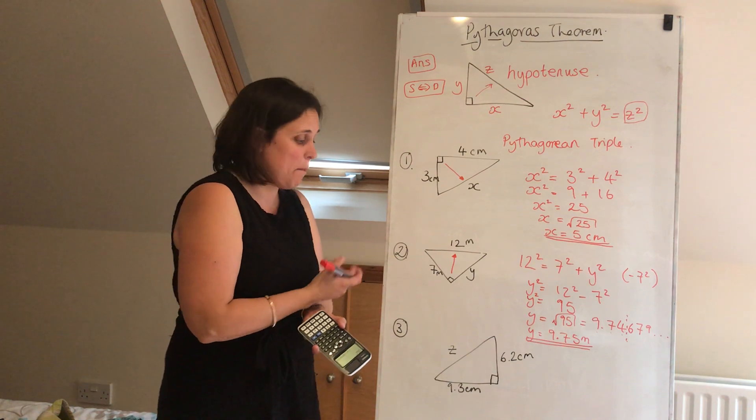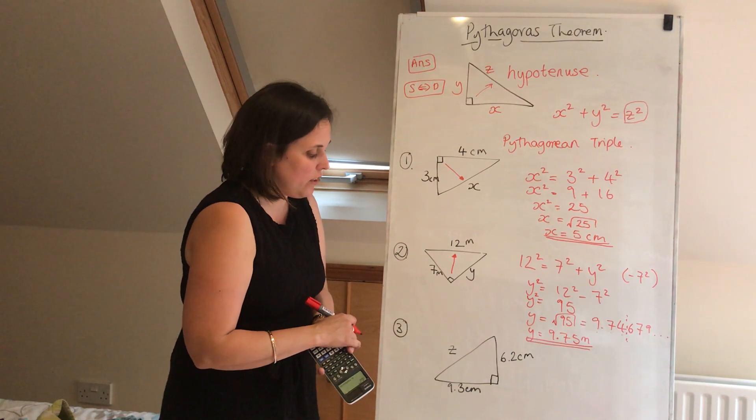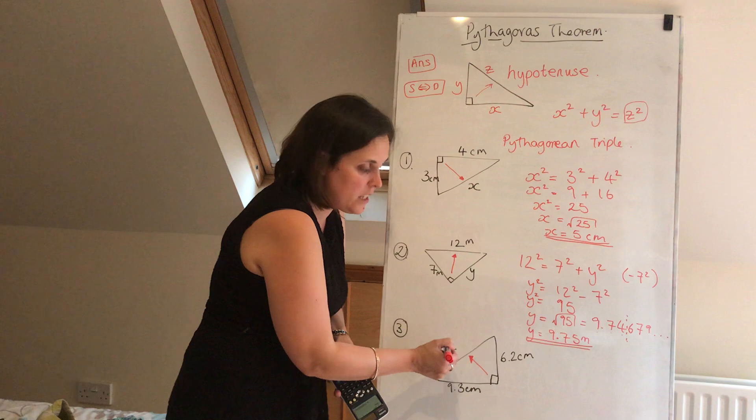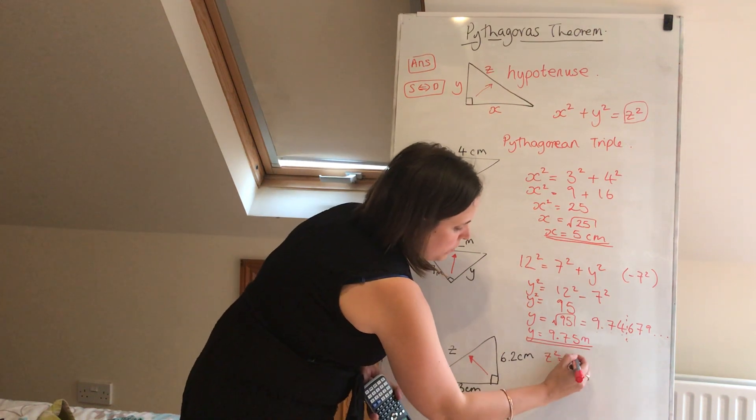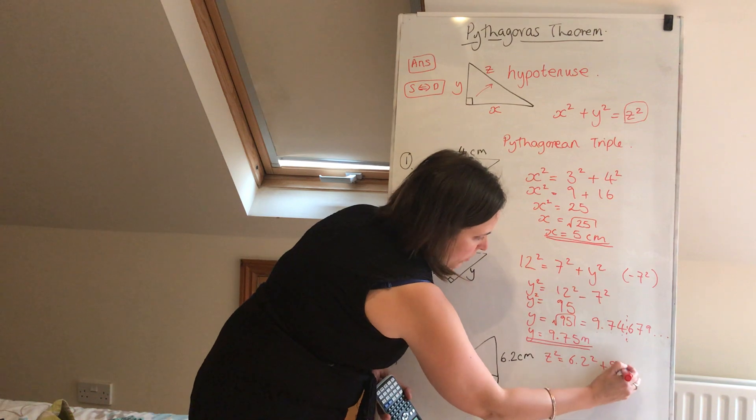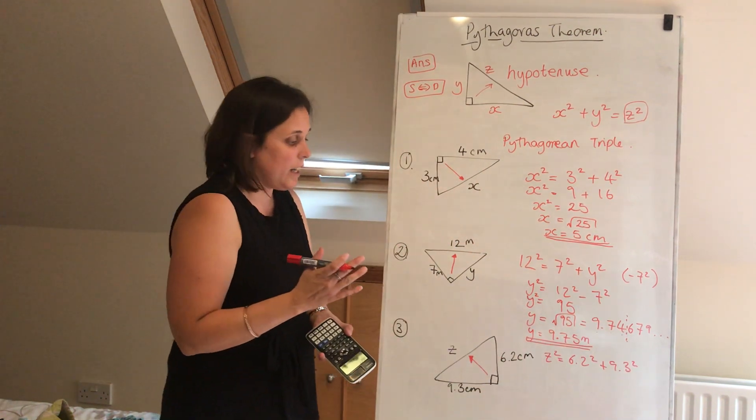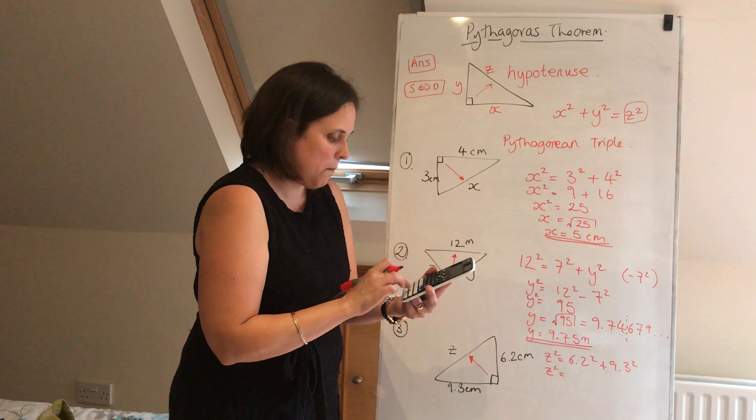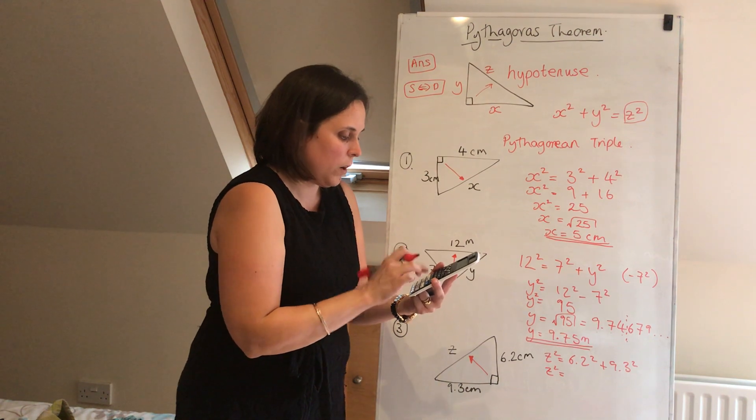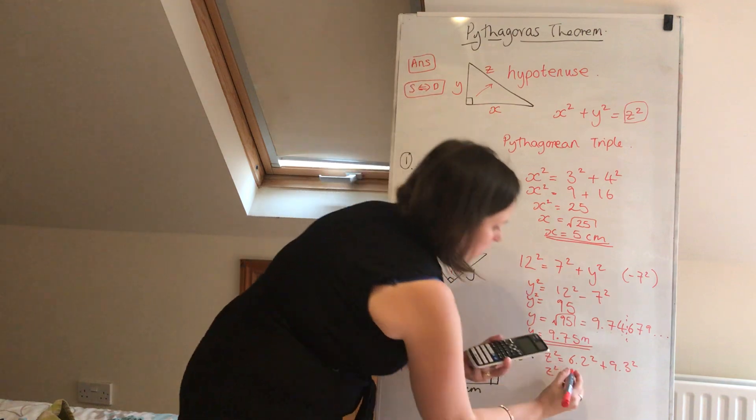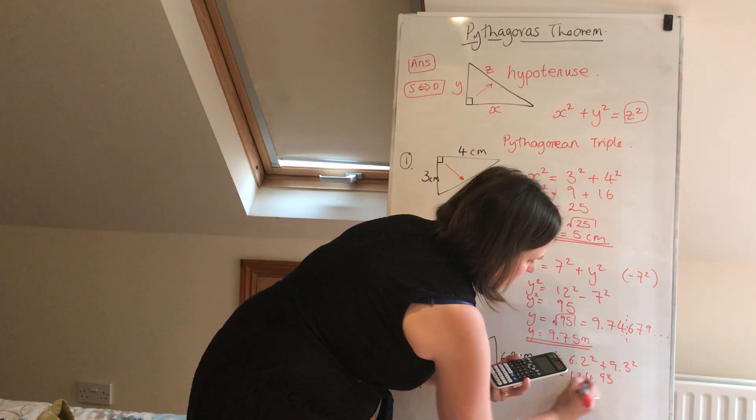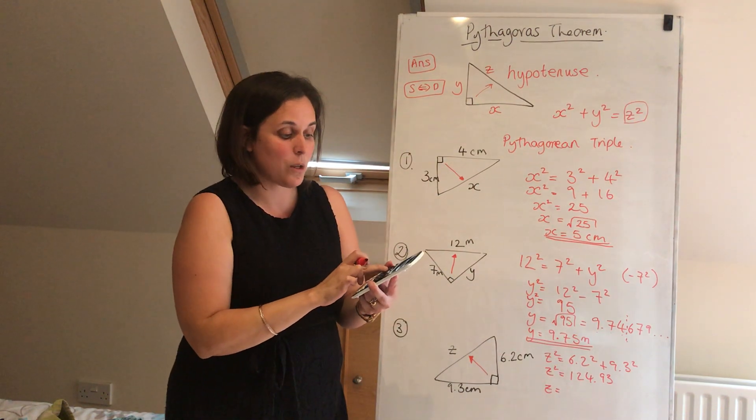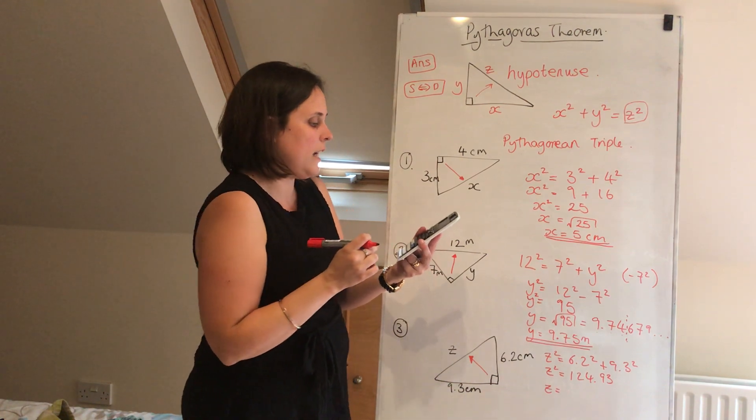Last one. It's exactly the same principle again, but I've just given you some decimal numbers just to show you the difference. Spot your hypotenuse, so it's opposite the right angle. So it's z. So z squared equals 6.2 squared plus 9.3 squared. No need to do any rearranging this time. So we're going to go straight for 6.2 squared plus 9.3 squared. So I get 124.93. And then to save space, I won't put the square root sign in, but we just square root that. So again, square root, answer, press the equals button, S to D.